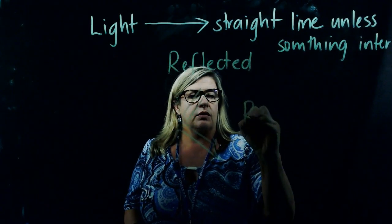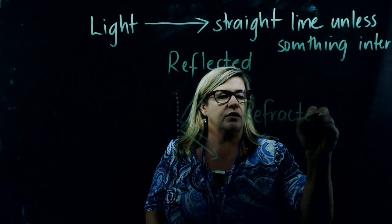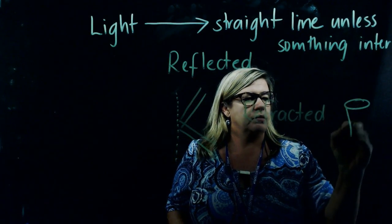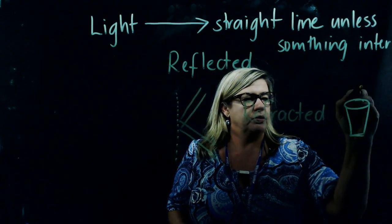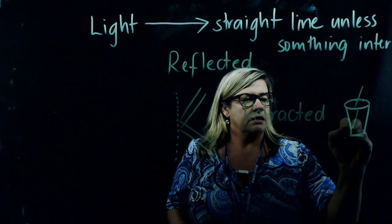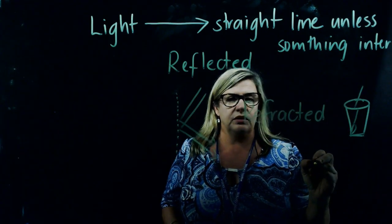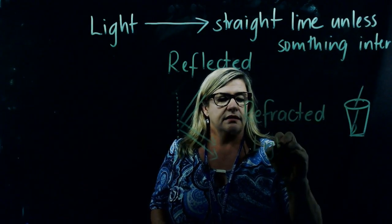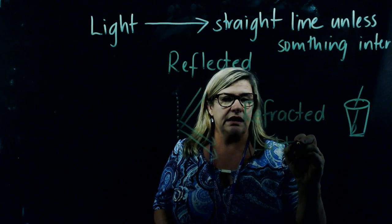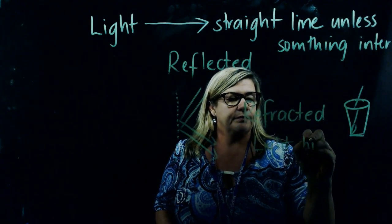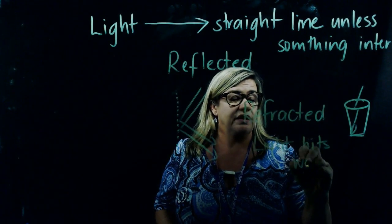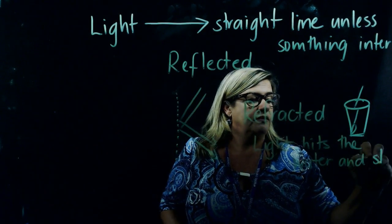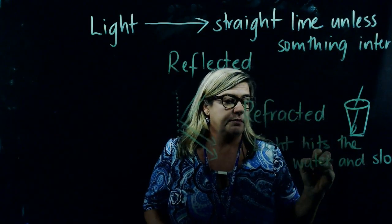The light rays hit that shiny object and reflect back in exactly the same angle that they hit the glass at. The second one I wanted to go over is refraction. When you might have done an experiment with a spoon in a glass and looked at it, it looks as though the spoon is bent or broken. What happens is that the light traveling in thin air hits the water, which is thicker, and slows down.